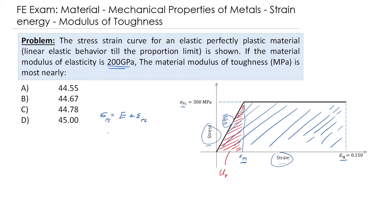For the stress at the proportional limit, it equals the modulus of elasticity multiplied by the strain at the proportional limit. That means the strain at the proportional limit equals sigma plastic divided by the modulus of elasticity, which is 300 megapascal divided by 200 × 10³ megapascal — converting the modulus from gigapascal to megapascal. This gives a strain at the proportional limit of 0.0015.